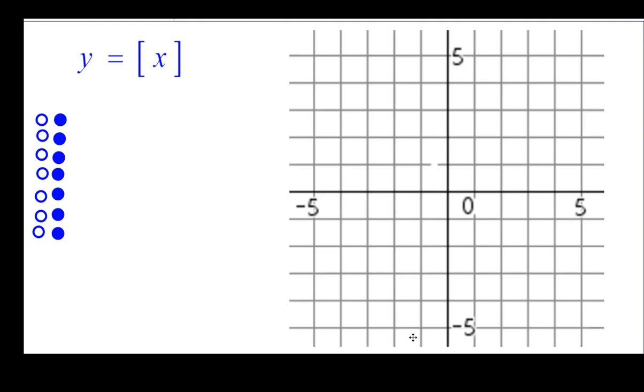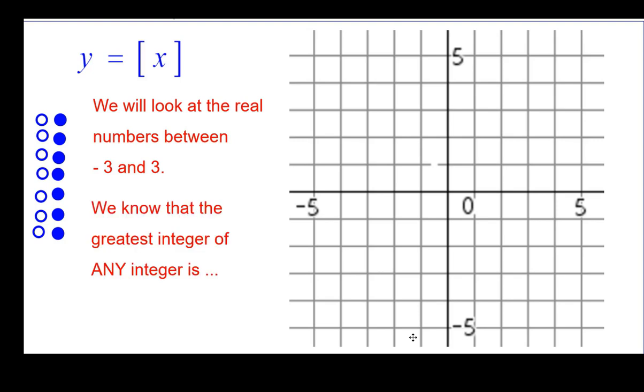All right, so let's go ahead and graph the greatest integer function, see what that looks like. So we're going to look at the real numbers between negative 3 and 3. Those will be the simplest to look at. And we're going to start off knowing that the greatest integer of any integer is the integer itself. So I'm going to plot those. At negative 3, it's negative 3. At negative 2, it's negative 2. The greatest integer of negative 1, negative 1, and so on. At 0, at 1, at 2, and at 3. So those are for the integers, okay?